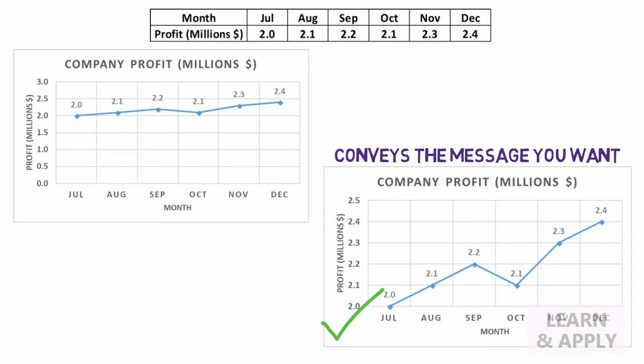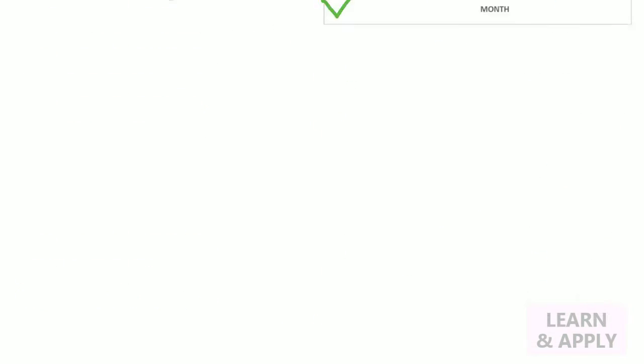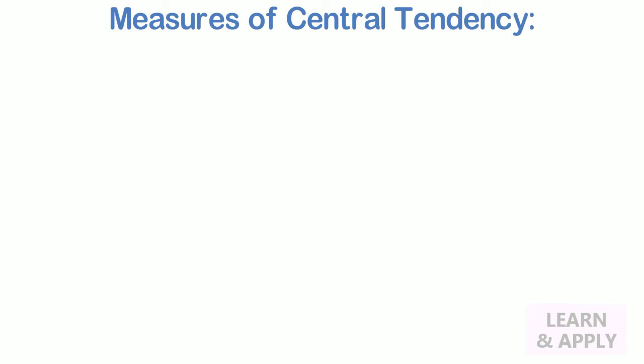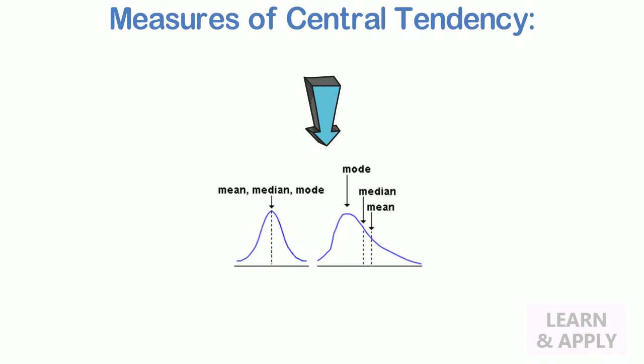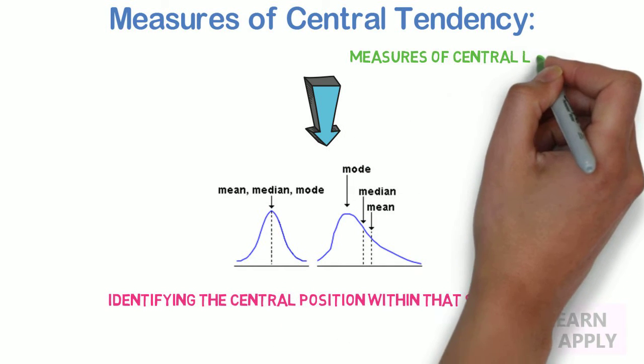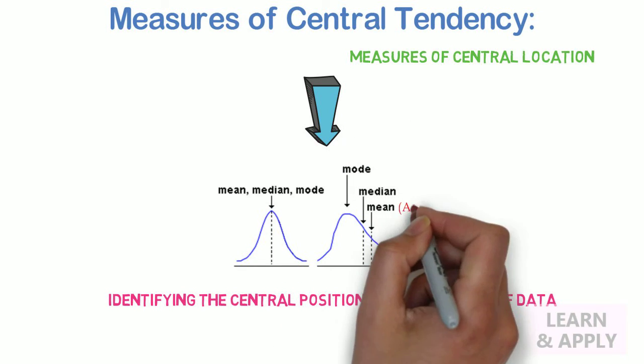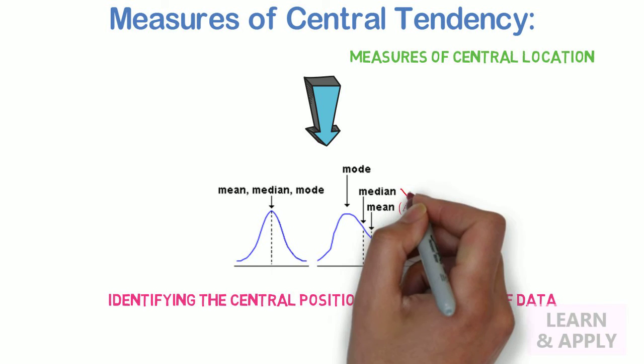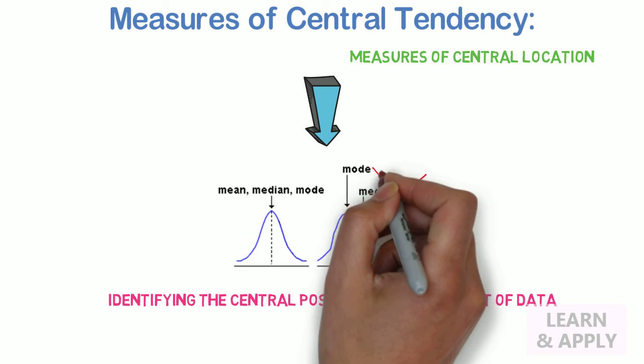Therefore, understanding of statistical concept is very important. So, let's begin to learn these concepts. Measures of Central Tendency: A measure of central tendency is a single value that attempts to describe the set of data by identifying the central position within that set of data. This is also called as measures of central location. The mean, often called as average, is most likely the measure of central tendency that you are most familiar with, but there are some others such as median and the mode.